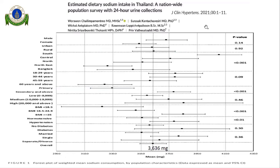Recent survey evidence shows the average sodium consumption among Thai people, measured by 24-hour urine collection, is about 3,600 milligrams daily — approximately 10 grams of salt per day. This is quite high compared to the recommended level of only 2,000 milligrams per day. We need this kind of information periodically in order to monitor the situation.